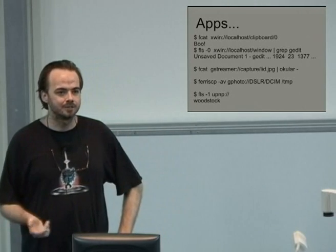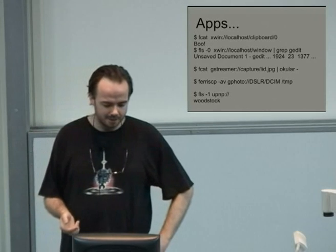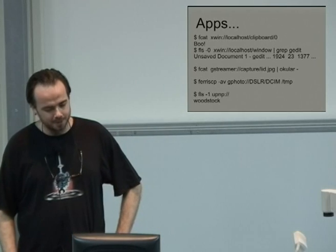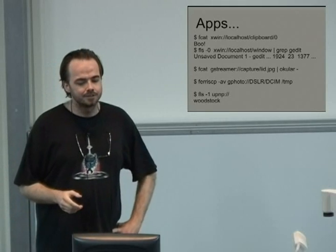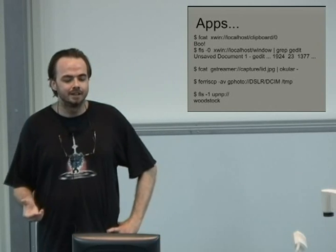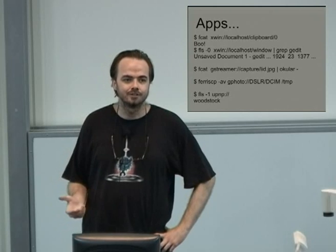GStreamer and GPhoto both have support. You can grab webcams, grab video streams off webcams as virtual MPEGs, and grab webcam snapshots as virtual JPEG files. With GPhoto you can slurp all of your stuff off your cameras. And there's UPNP support, so MythTV and any other UPNP device. UPNP is incredibly handy because cheap devices that offer UPNP often have search interfaces that really suck — but if you can mount them as virtual file systems in LibFerris, you can index them and search using LibFerris.